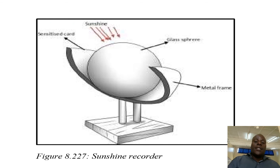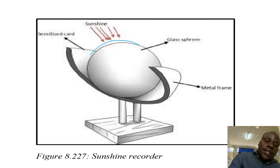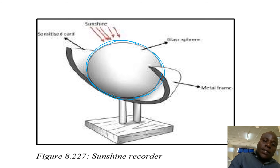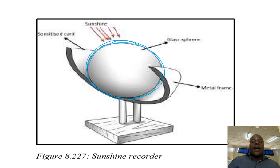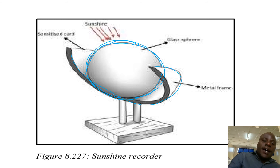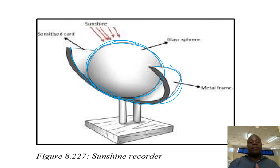This is an illustration of the Campbell. This is a glass sphere — the whole of this is a glass sphere. And it is partially surrounded by a metal frame.